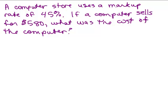So we're going to have to introduce a variable here. We're going to let C be the cost of the computer, not the selling price, but the cost of the computer.